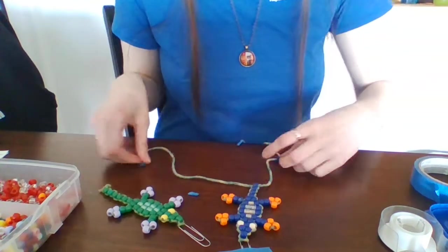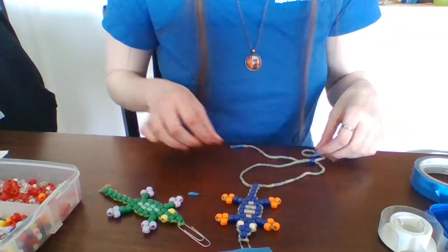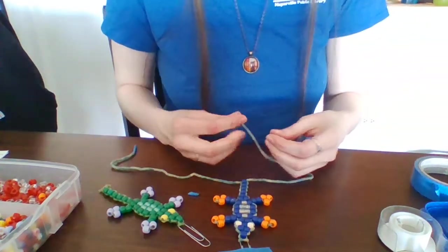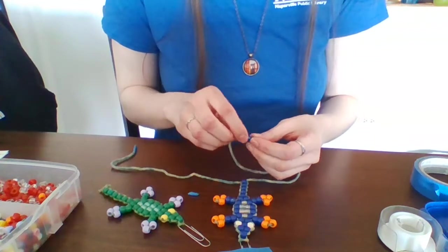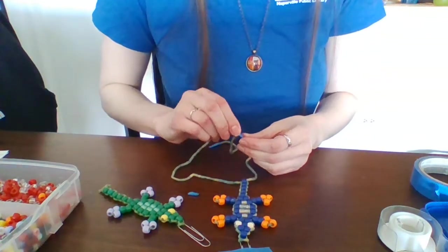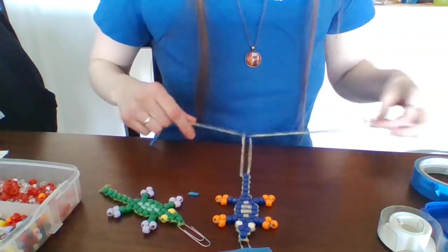All right, just two more beads left. Last tail bead. So you're going to thread this exactly the same as all the others. One string in one way, the other string goes opposite. Pull tight.